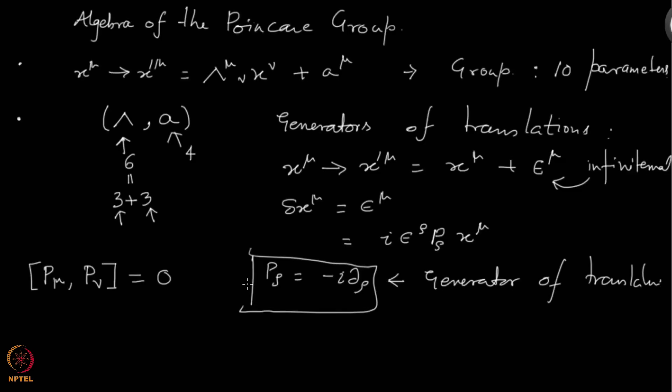Here we have the commutation relation of p mu and p nu. They commute, and then you have an exercise to do. Take the operators j mu nu which we already had from Lorentz transformations and take the p rho and find out what the commutator is, and what you will find is that this comes out to be i g mu rho p nu minus i g nu rho p mu, and this is what you will find.